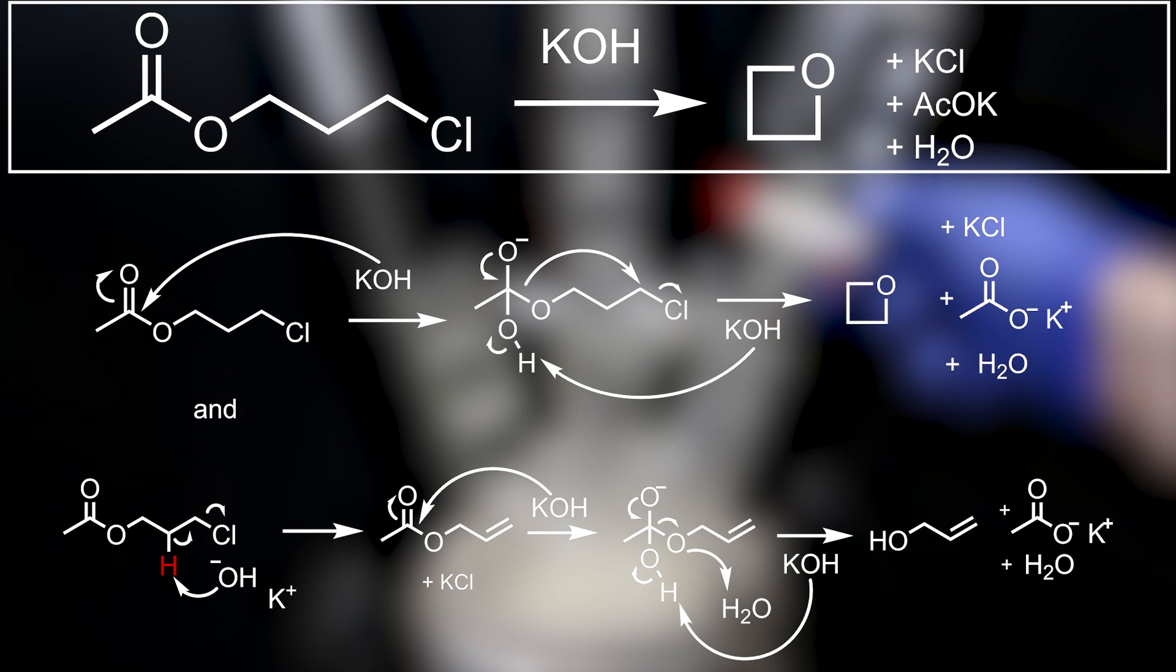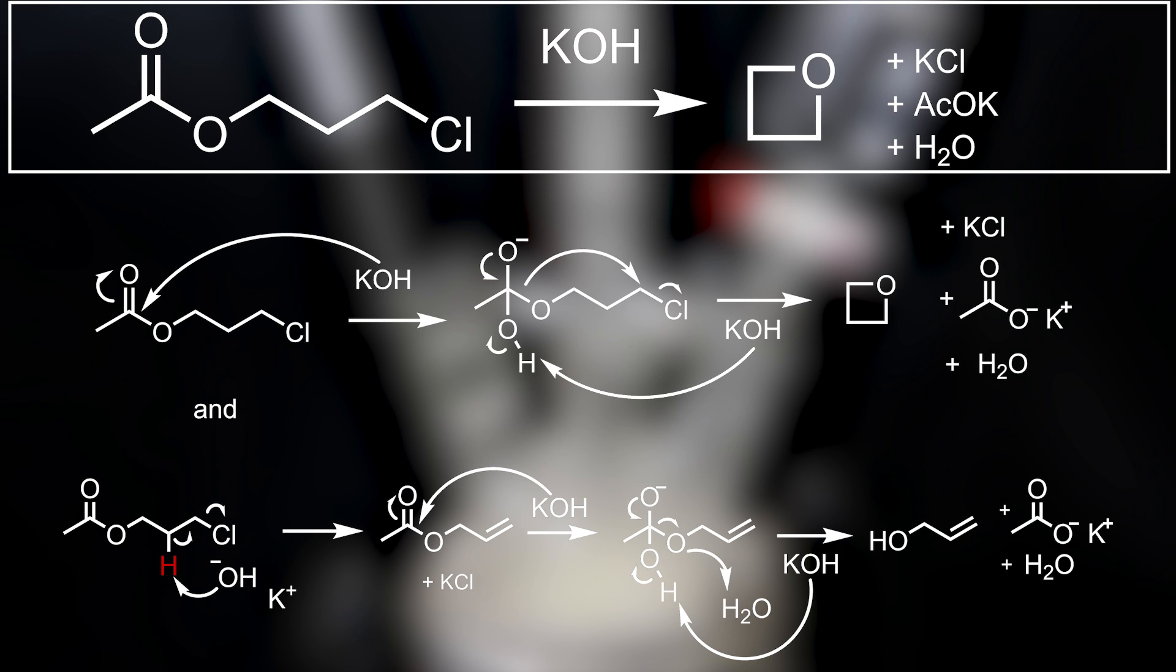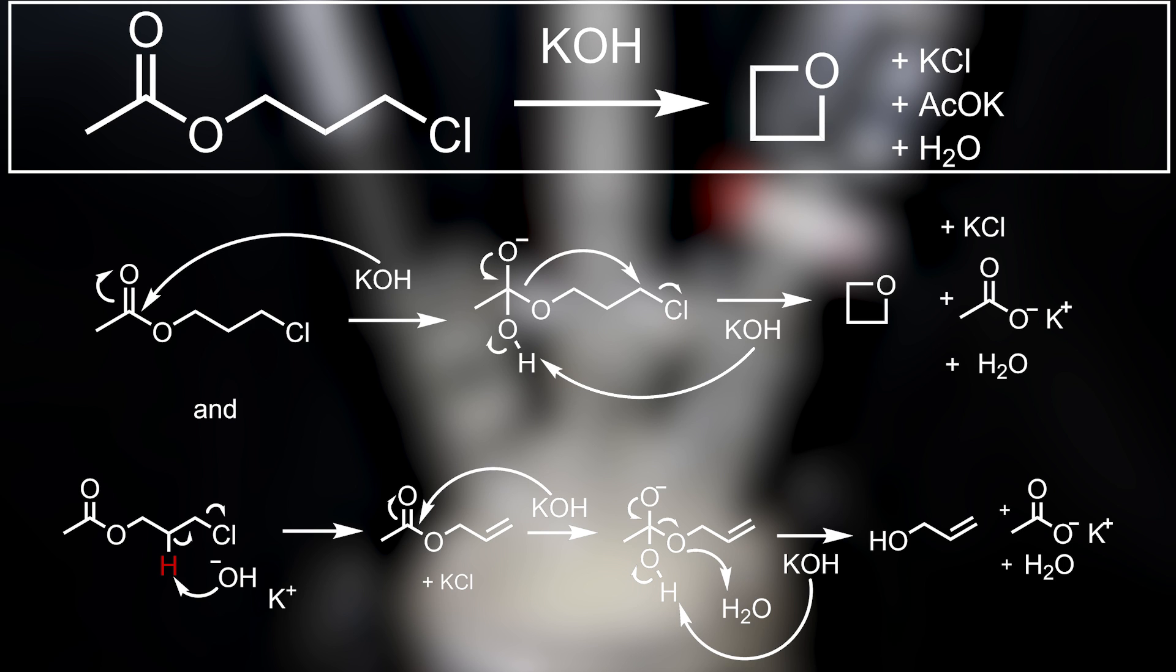This is what happens in the formation of oxytane, but a second mechanism to form allyl alcohol can also take place in these conditions. In that case, the hydroxide ion is able to take up a proton from the middle carbon, causing the bond electrons of the hydrogen to form a double bond, which moves the bond electrons of the chlorine onto the chlorine atom, and kicks it off, which can form potassium chloride with the remaining potassium ion. We are then left with allyl acetate as the product. This can then undergo base-catalyzed hydrolysis, by attack of the hydroxide ion onto the carbonyl carbon. It does the same as in the previous mechanism, but instead the ester bond electrons move onto the ester oxygen, which then takes up a proton from water to produce allyl alcohol, and regenerate potassium hydroxide. And again, potassium acetate and water like before.